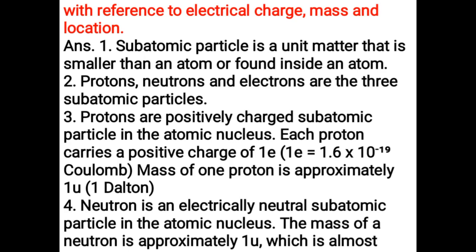Protons are positively charged subatomic particles found in the atomic nucleus. Each proton carries a positive charge of 1e, where 1e = 1.6 × 10⁻¹⁹ coulombs. The mass of one proton is approximately 1u (1 dalton).